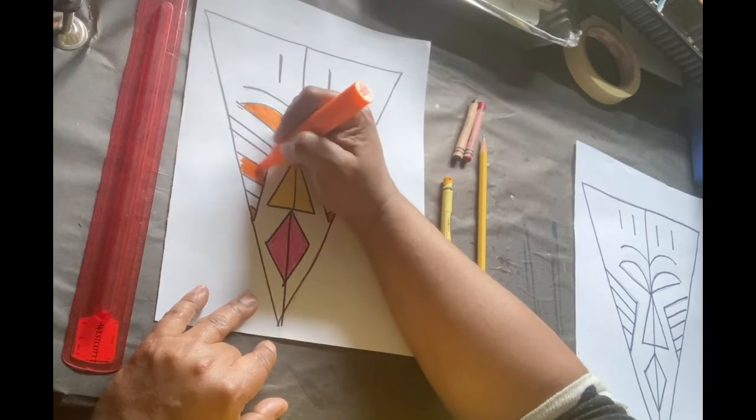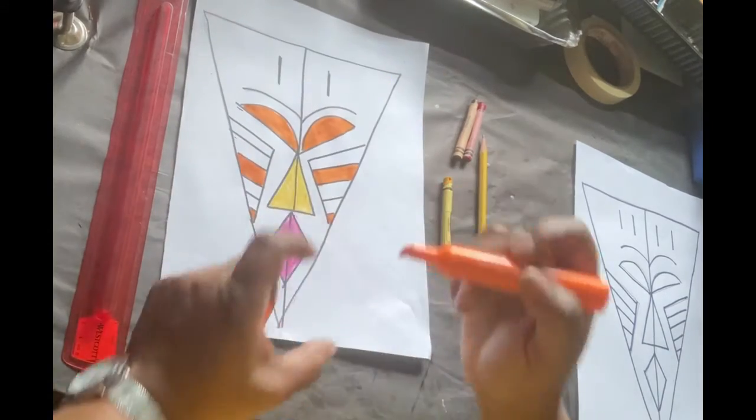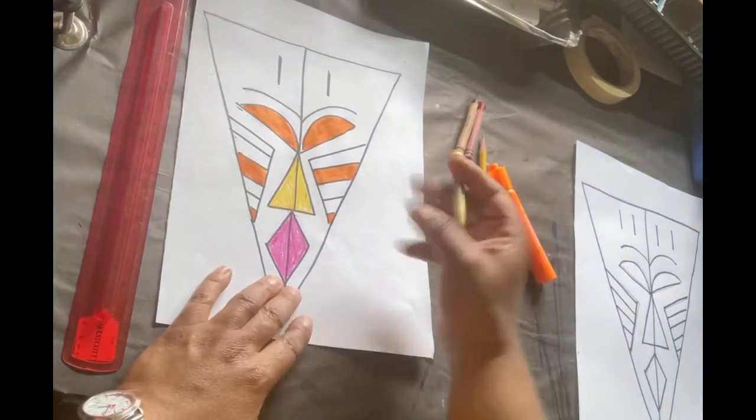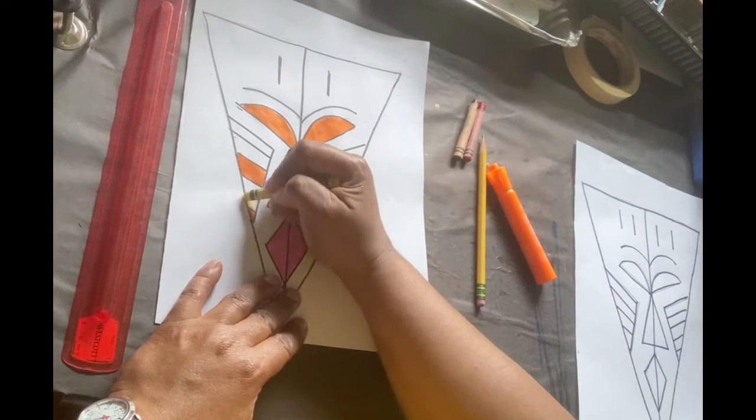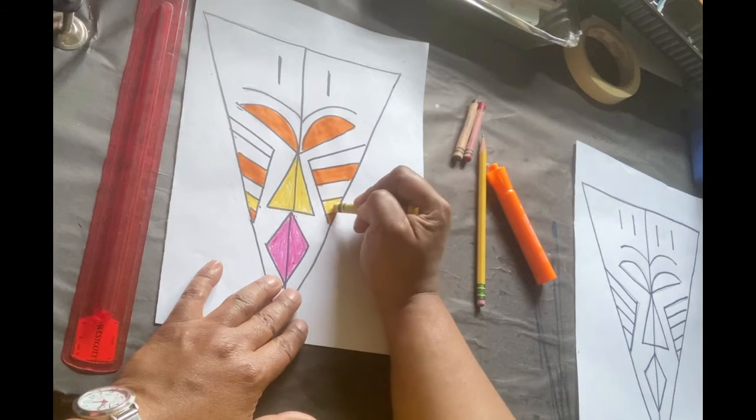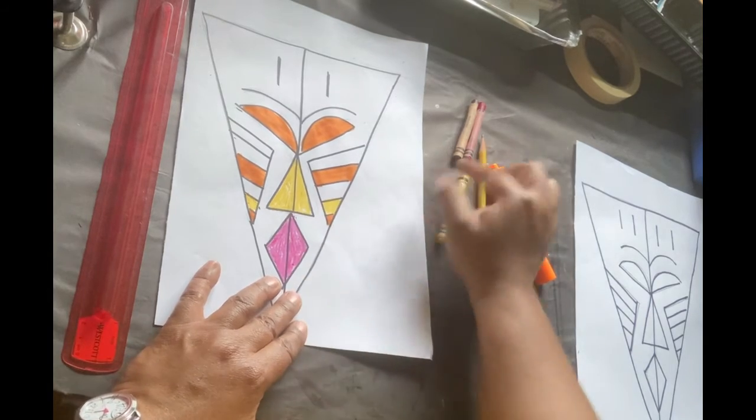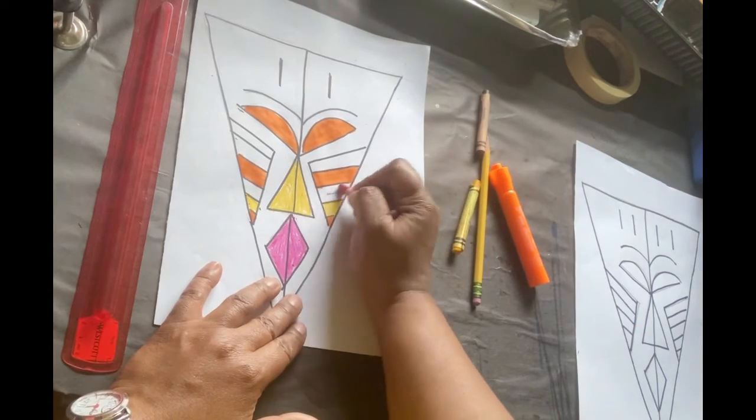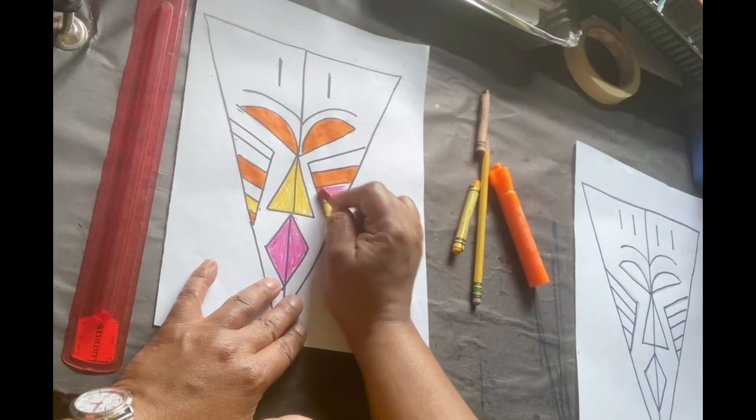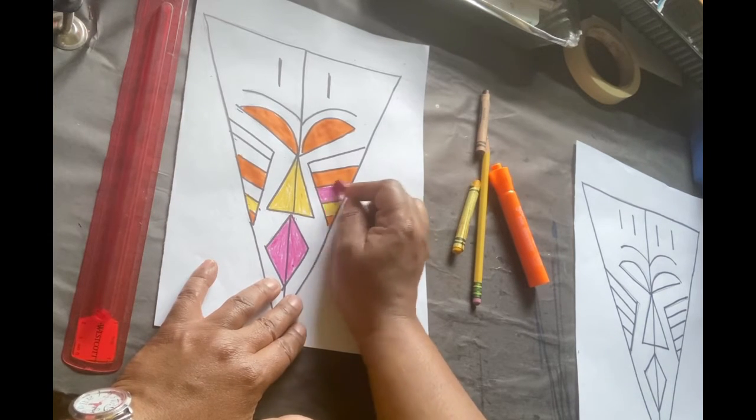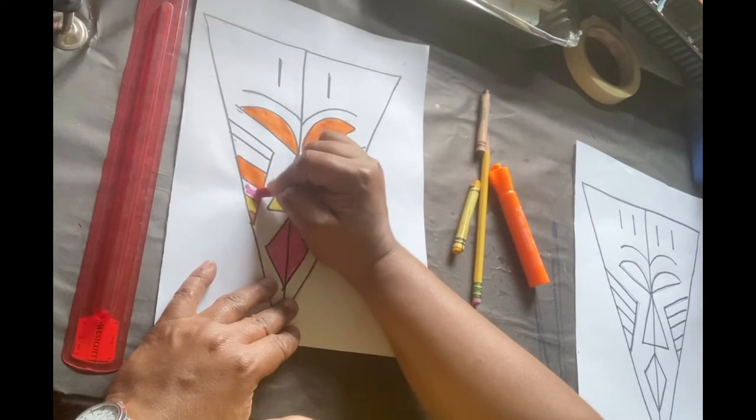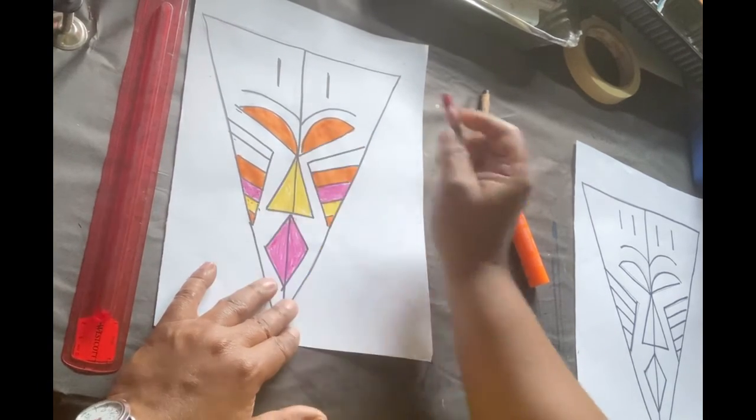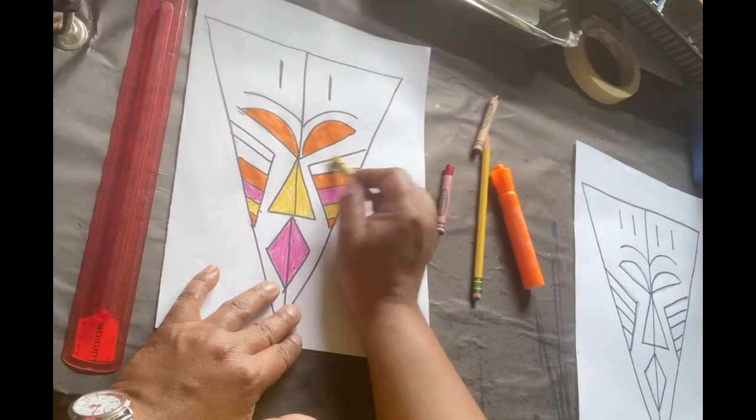And then I'm going to fill in those spaces. Yellow here, yellow here, making it symmetrical, basically. Pretty much. I'm making it symmetrical. I'm making it the same on both sides. Okay, and then I'm going to go above that orange with my yellow.